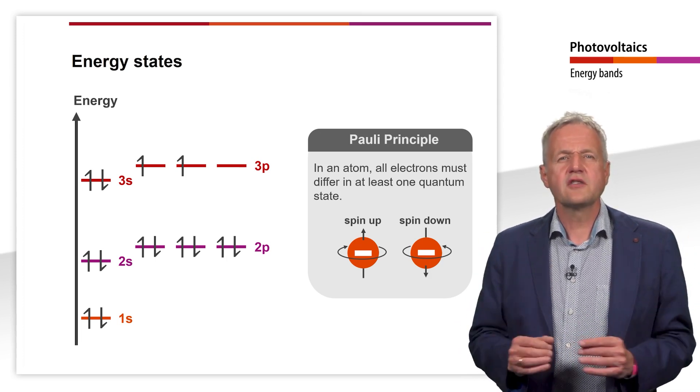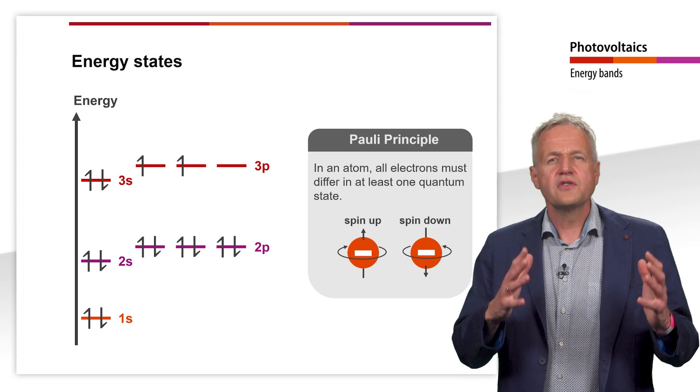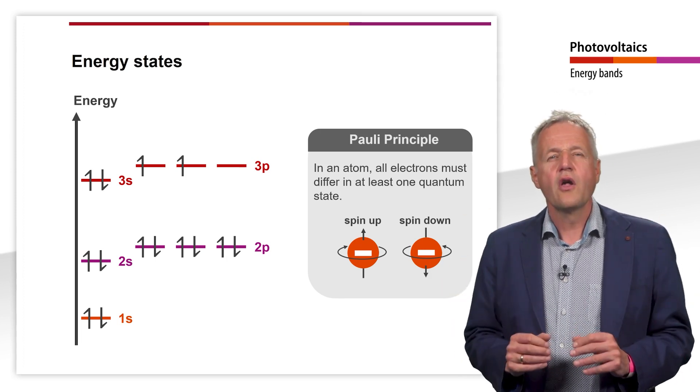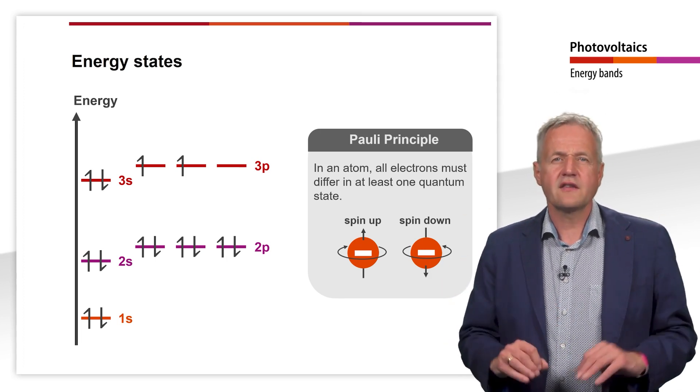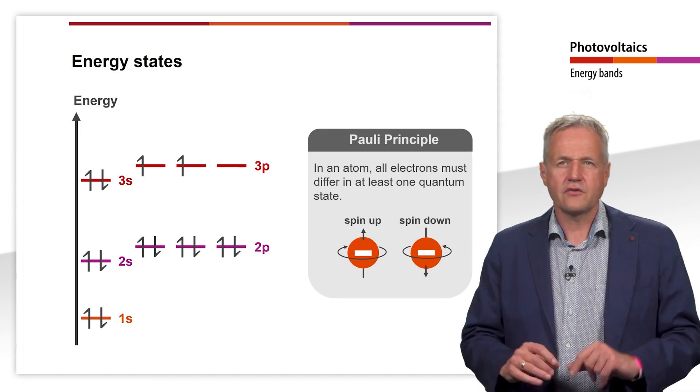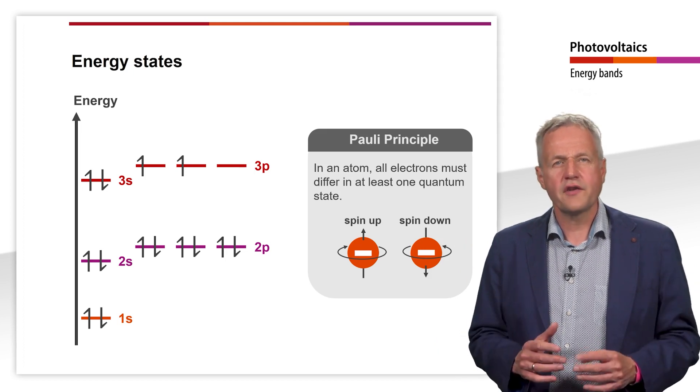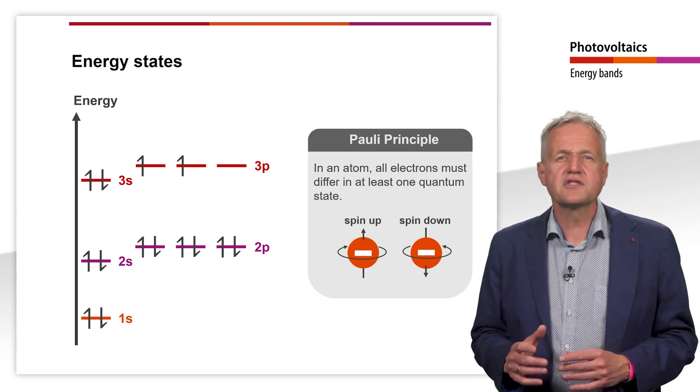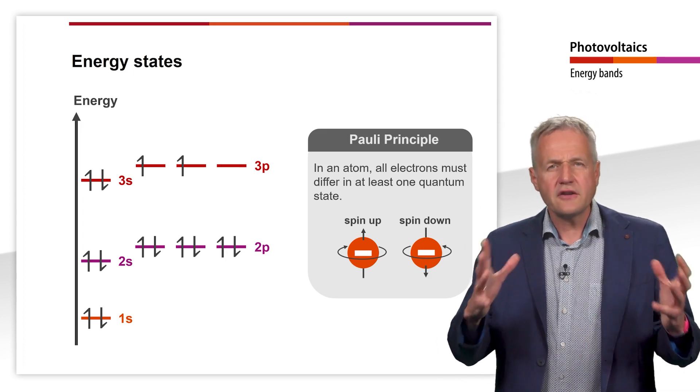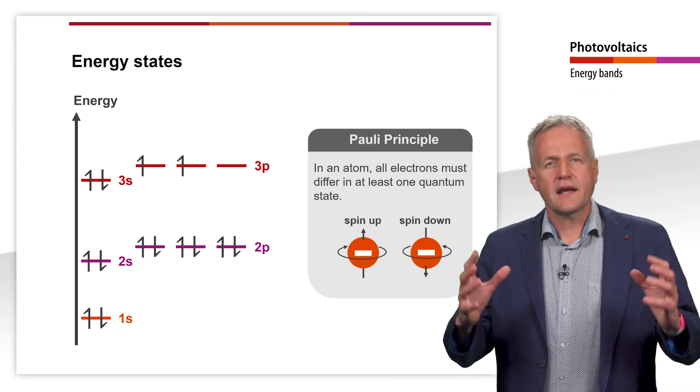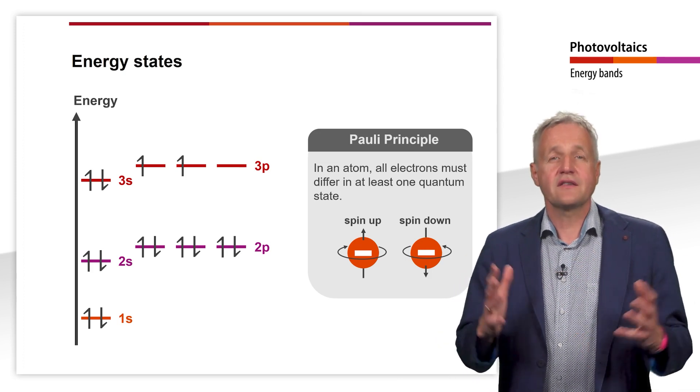All atoms strive to either fill up their outermost shell or lose enough valence electrons to expose the next lower shell. This state is called the noble gas configuration. In order to reach this configuration, atoms form a chemical bond with other atoms.